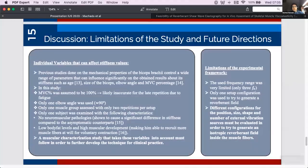Now, it is also important to point out that the present study has several shortcomings, but its preliminary results within this limited framework provide guidance for future directions. So, previous studies done on the mechanical properties of the biceps brachii controlled a wide range of parameters that can influence significantly on the obtained results about its stiffness, such as age, size of the biceps, elbow angle, and MVC percentage. In this study, for example, MVC percentage was assumed to be 100%, which may or may not be the case for the late repetition due to fatigue. Only one elbow angle was used, only one muscle group assessed, with only two repetitions per setup, and the subject did not present neuromuscular pathologies, which had been shown to cause a significant difference in stiffness compared to the symptomatic counterparts, and he also presented low body fat levels and high muscular development, making him able to recruit more muscle fibers at will for voluntary contraction. So, a muscular characterization study that takes these variables into account must follow in order to further develop the technique for clinical practice.